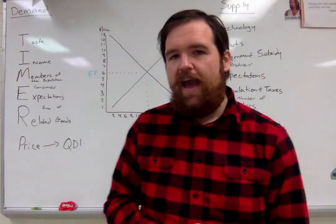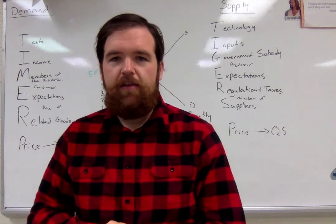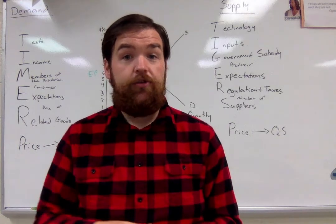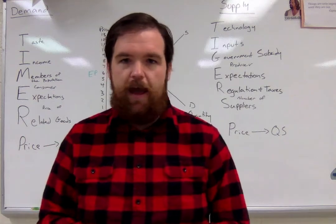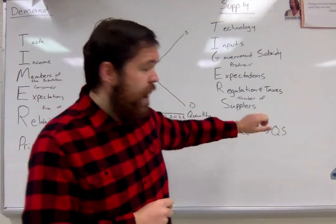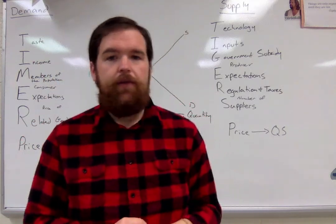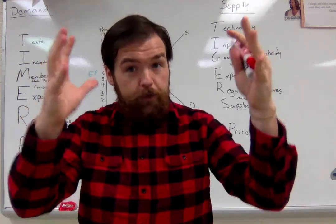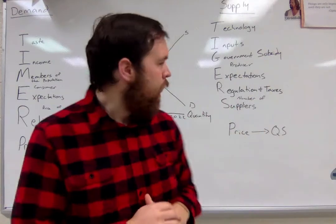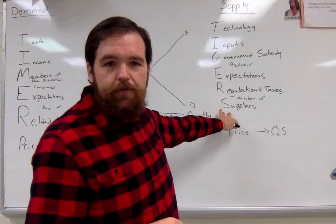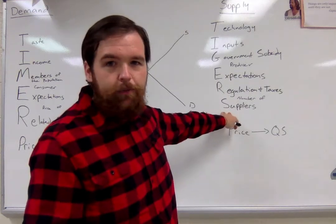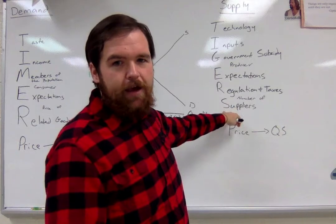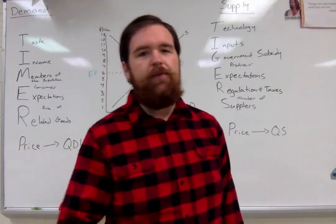Next is government regulation and taxes. When there are regulations or taxes, it's always going to be a decrease in supply — that's the government taking money from a business, making it harder for them to make their good or service, so supply naturally decreases. Our last shifter of supply is the number of suppliers. If there are more people making the good or service, supply is naturally going to go up; if there are less people, it's naturally going to go down. Why are there five Starbucks on this block? Because the supply of coffee needs to be that high. If they close one, supply goes down — it doesn't mean Starbucks is going out of business, just that there's less coffee than there used to be.